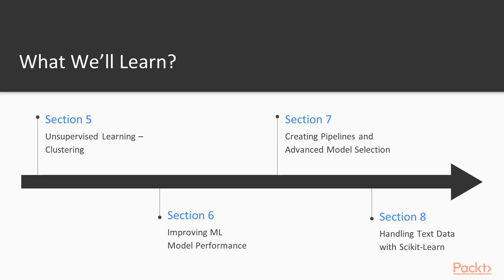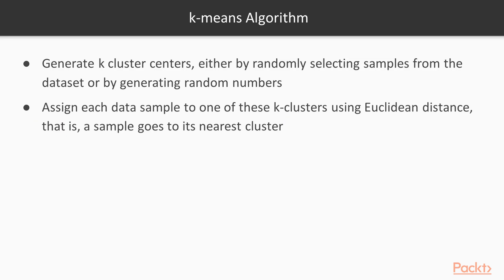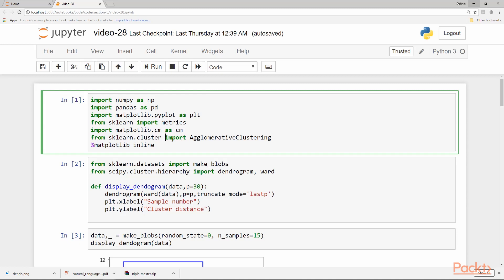Section 5 will be about clustering, which is another form of unsupervised learning. We will introduce ourselves to clustering and k-means clustering, and then we will also cover agglomerative or hierarchical clustering.